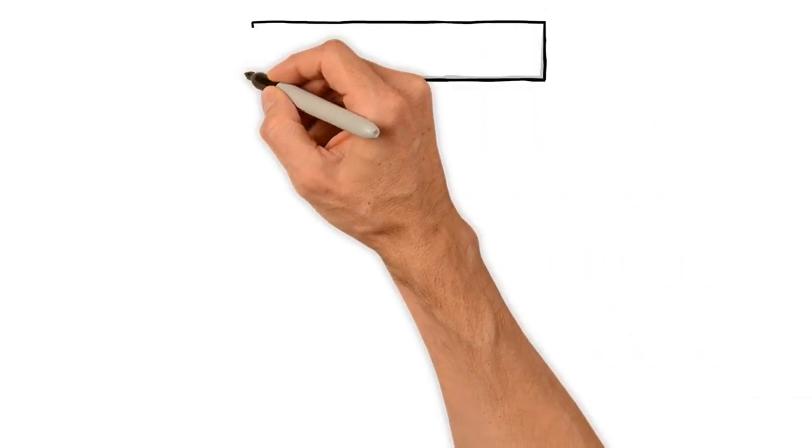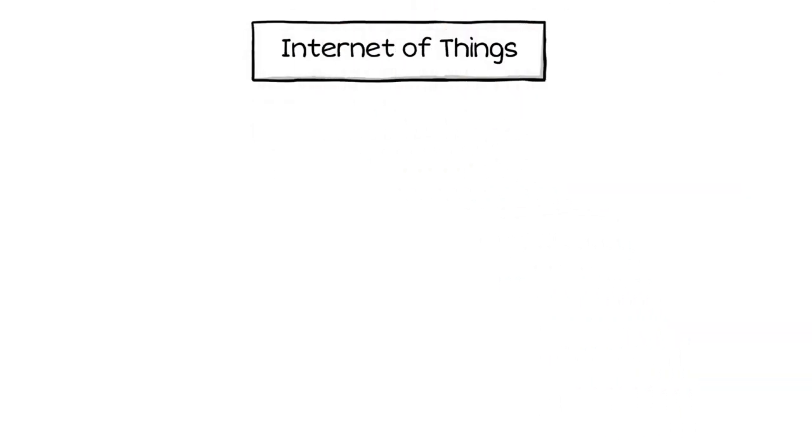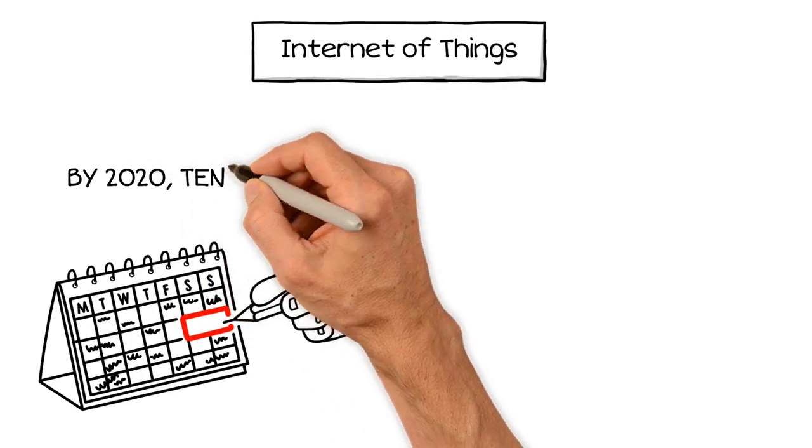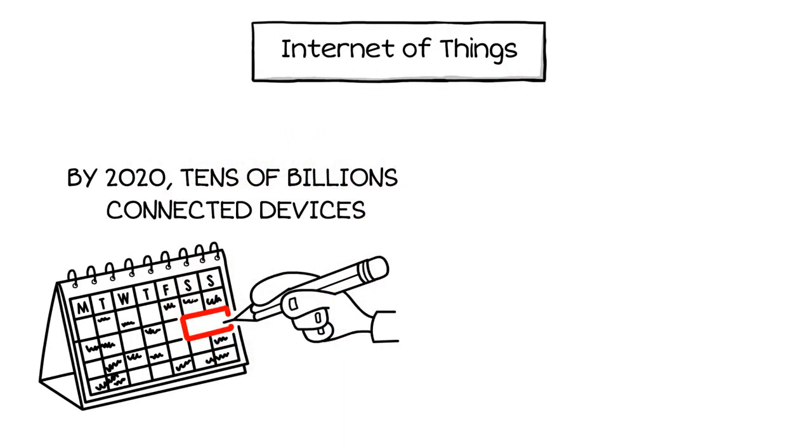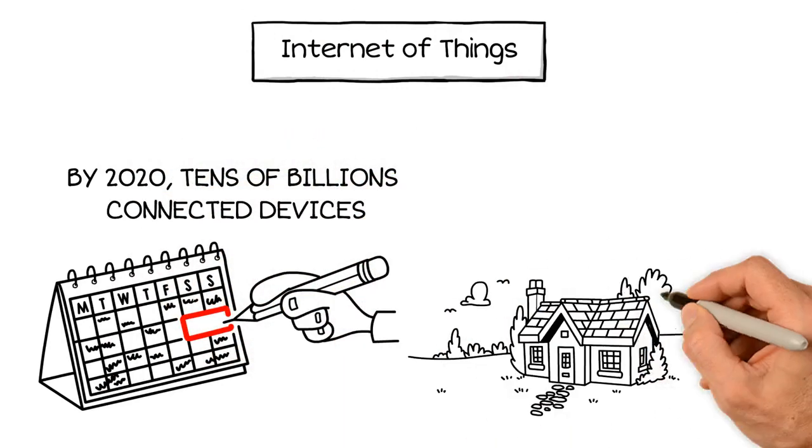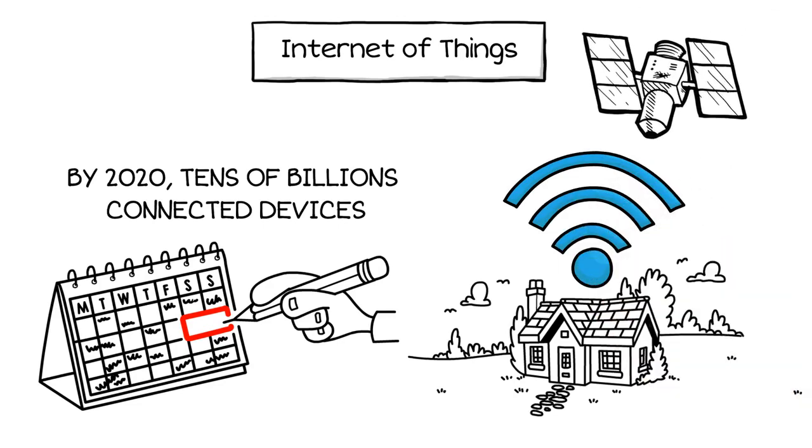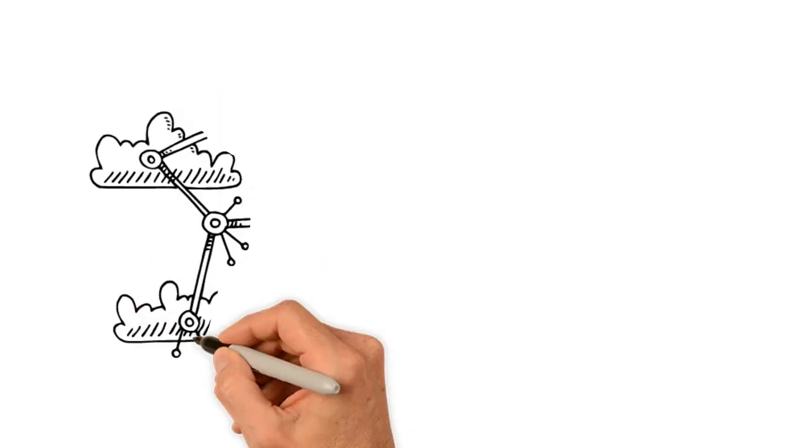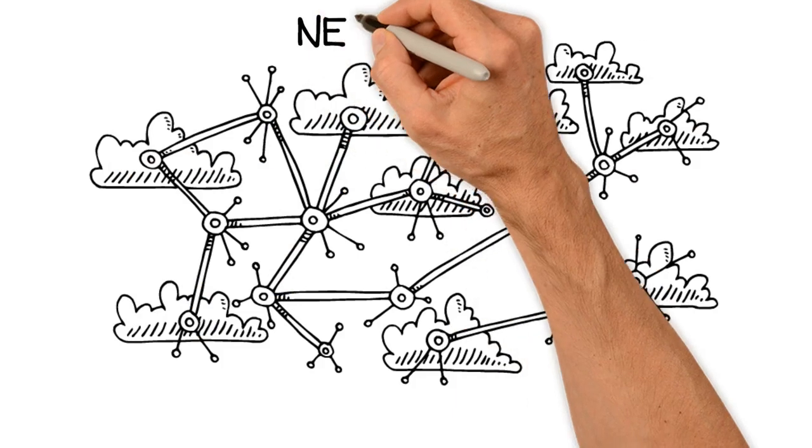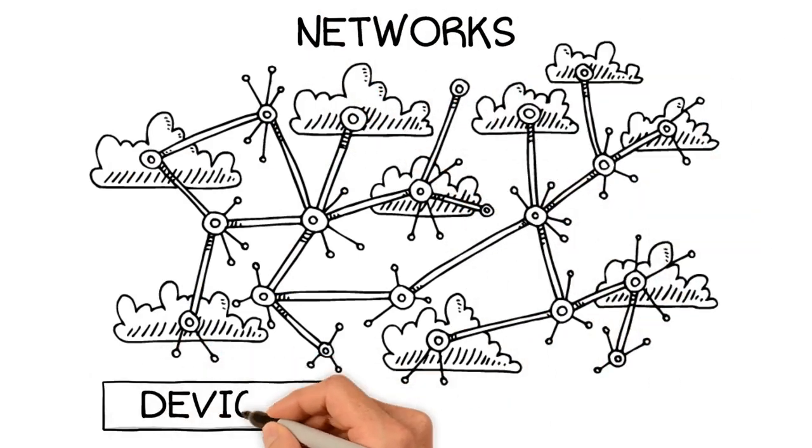Let's start with the Internet of Things. All industry experts agree that by 2020, tens of billions of connected devices will be collecting data and sending it across networks to IoT applications. What many people don't realize is that networks are as crucial to enabling IoT as devices and applications.